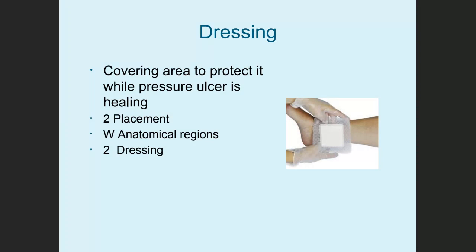Dressing is in the placement section. Dressing is covering an area to protect it while the pressure ulcer is healing — protecting it from bacteria or anything else. It's coded as two for placement, W for anatomical regions, two for dressing. That's pretty straightforward.